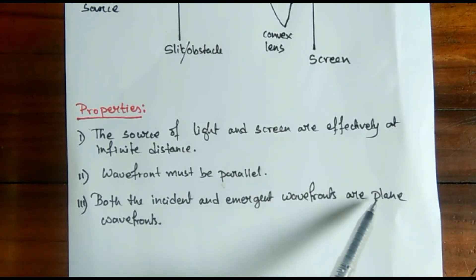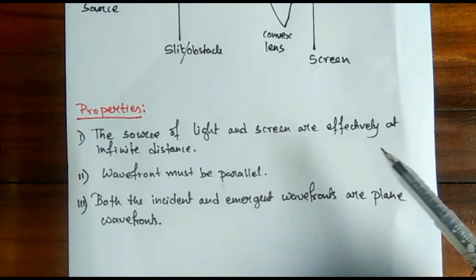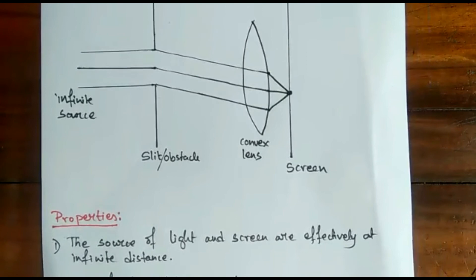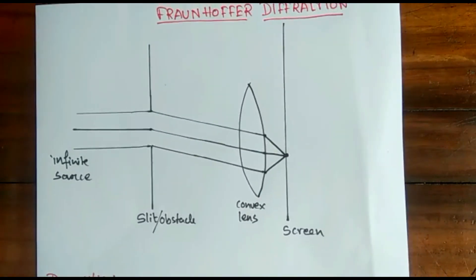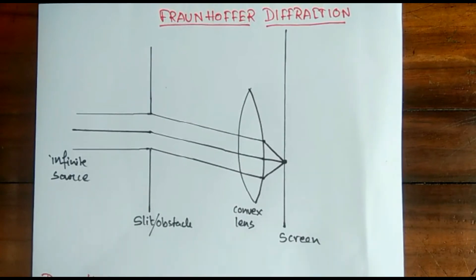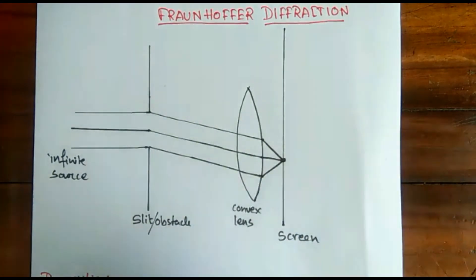And so as the emergent wavefronts. All this is of plane wavefronts only because these are at infinite distance from the slit. So I hope the basic information about Fraunhofer diffraction is clear to you. And one more thing you need to know is the advantage of Fraunhofer diffraction.